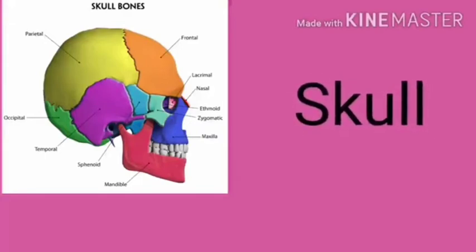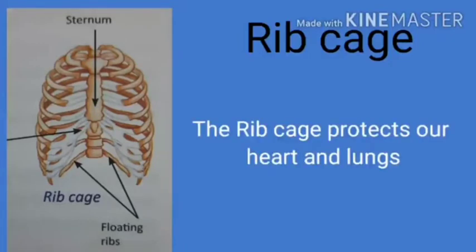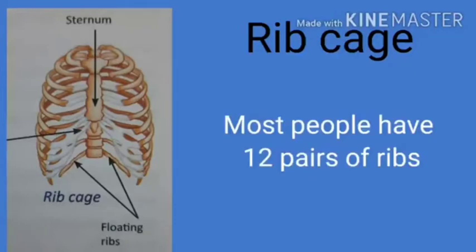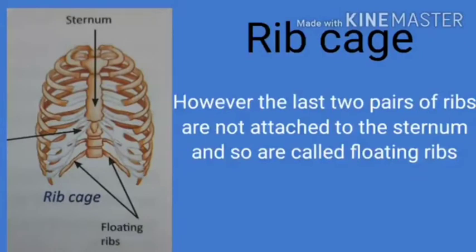Now, coming to the rib cage. Ribs are thin and curved bones that form a cage in the chest called the rib cage. You can see the cage-like structure in the picture — it is made up of ribs. The rib cage protects our delicate organs, the heart and lungs. Most people have 12 pairs of ribs, so the rib cage is made up of 24 bones. A long bone at the center of the chest called the sternum holds the ribs from the front, and the ribs are also attached to the backbone at the back. The last two pairs of ribs are not attached to the sternum and so are called the floating ribs.